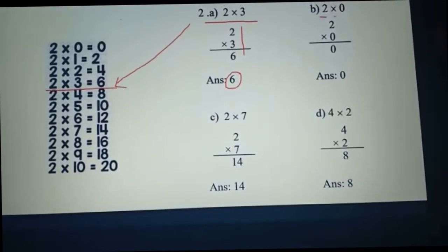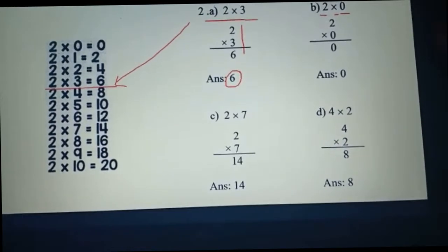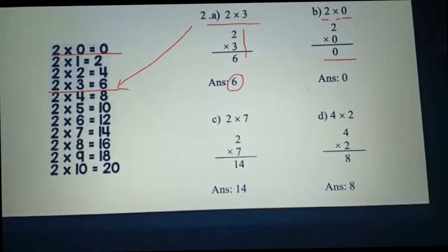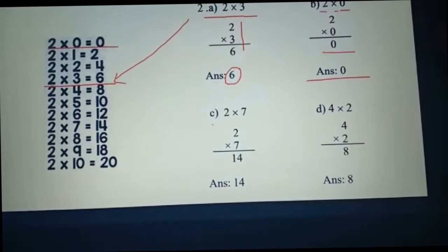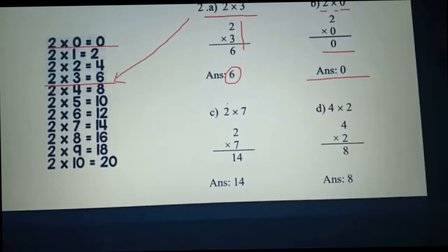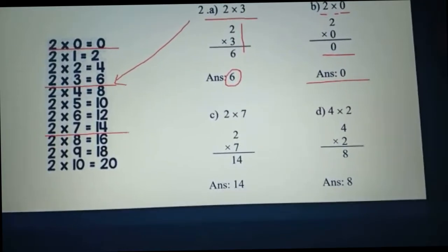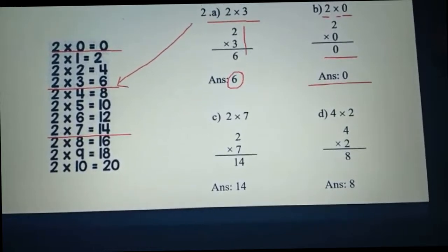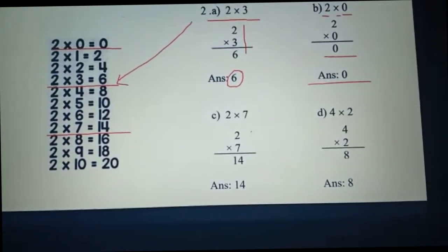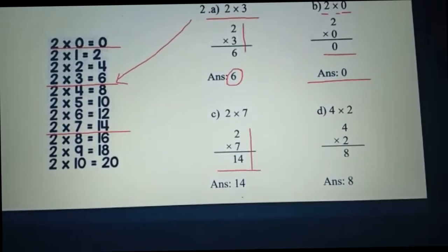Number B: two multiply by zero. If we multiply two by zero, the answer will be zero. Number C: two multiply by seven. Two sevens are fourteen, so if we multiply seven by two the answer will be fourteen.